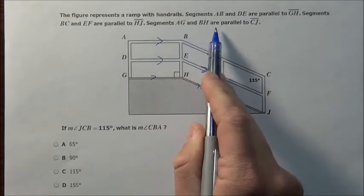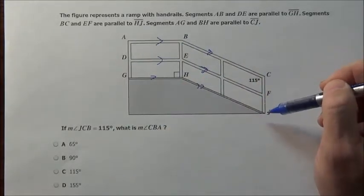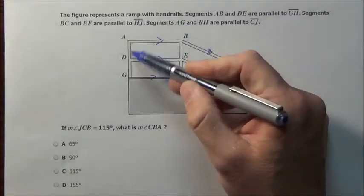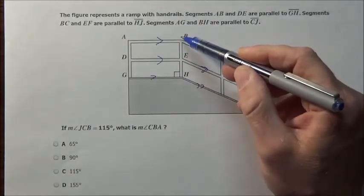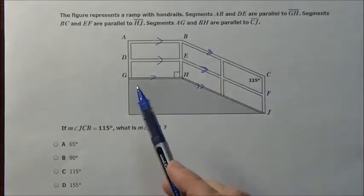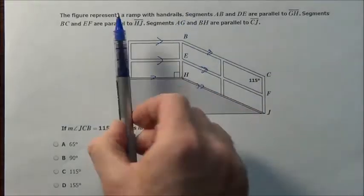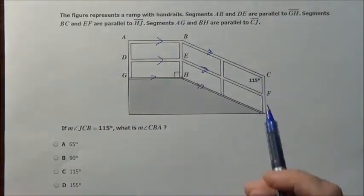Segments AG and BH are parallel to line segment CJ. So everybody that looks parallel is parallel. These going down are parallel to one another, and all these rails, as we expect, are all sticking perfectly up vertically.